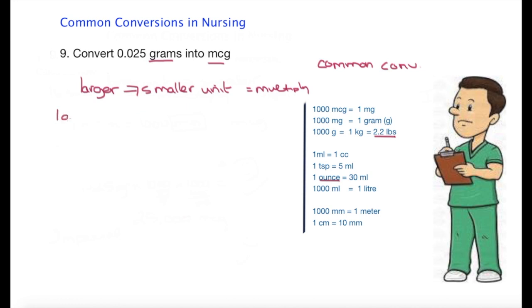So I'm looking at my conversion chart. I can see that one gram is equal to 1,000 milligrams, but I don't want milligrams as my end unit - I want micrograms. So I look at my chart again and I see that one milligram is equal to 1,000 micrograms.